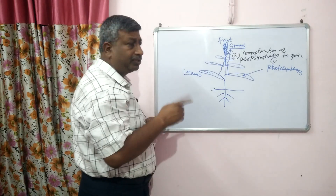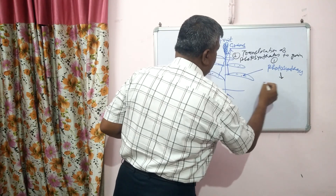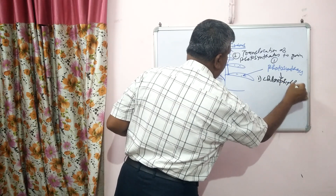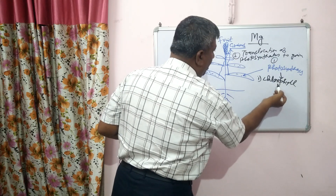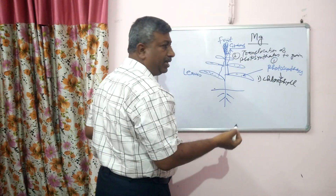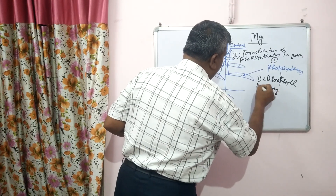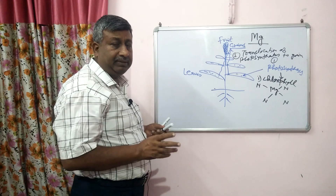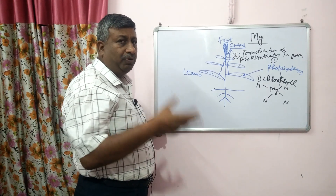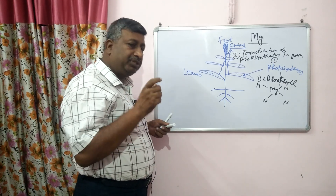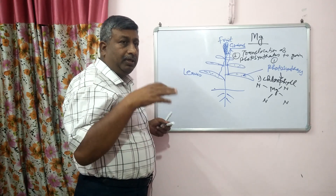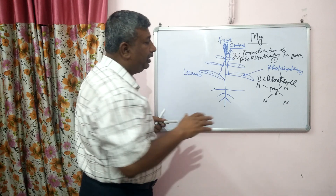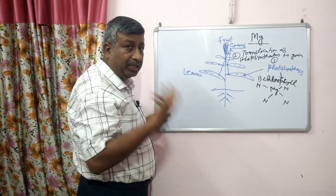Magnesium affects both processes — photosynthesis as well as translocation. Magnesium is a constituent part of chlorophyll. Without magnesium, chlorophyll is not made. In the porphyrin ring structure of chlorophyll, four atoms of nitrogen are attached to magnesium. So nitrogen and magnesium are both essential components of chlorophyll. That is why in magnesium deficiency as well as nitrogen deficiency there is a loss of chlorophyll, causing yellowing — chlorosis.